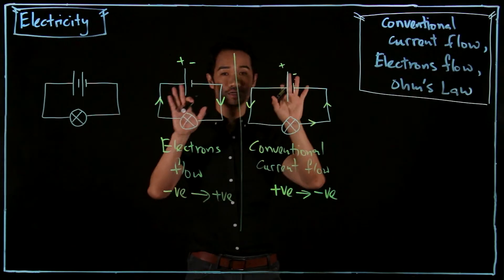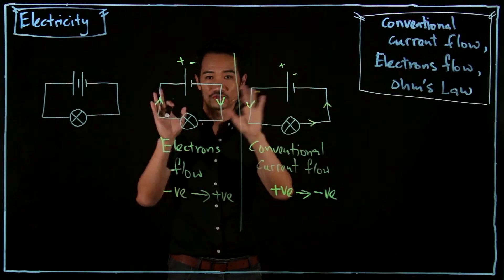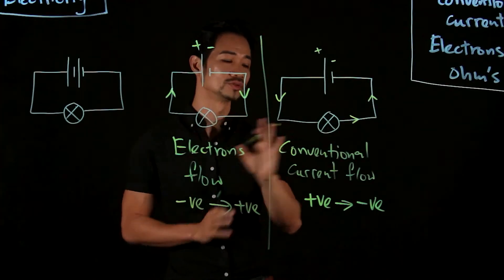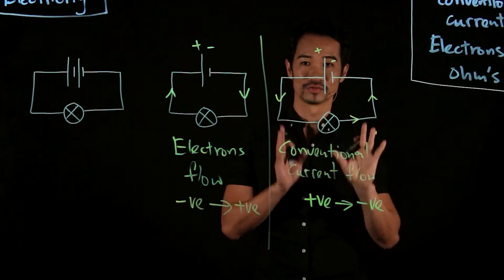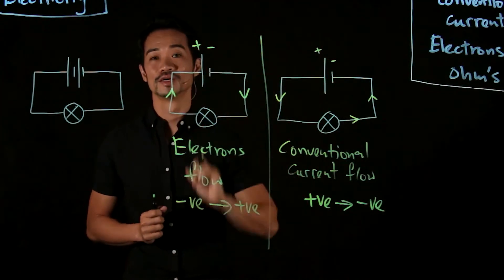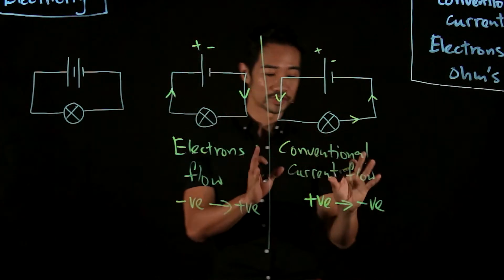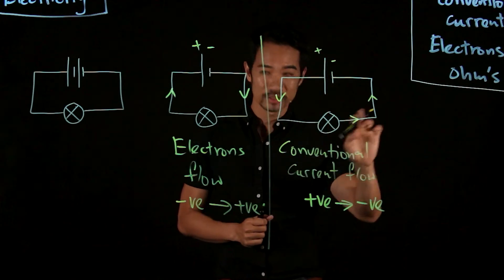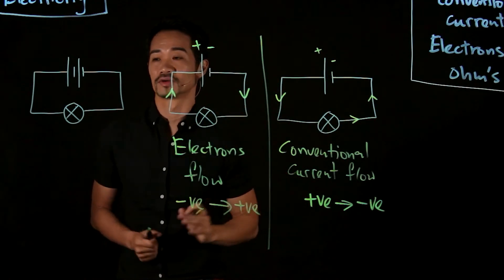But in all our drawing from now on, we always use conventional current flow. But in actual life, it's actually moving from minus to plus. So what is conventional current flow? Plus to minus. Electrons, minus to plus. Easy peasy.